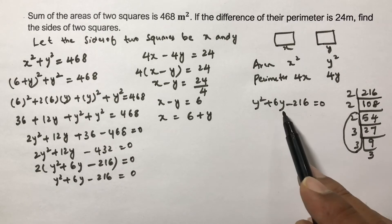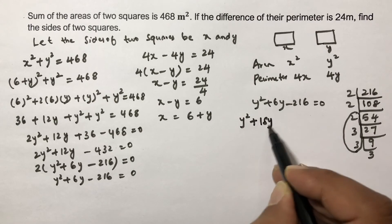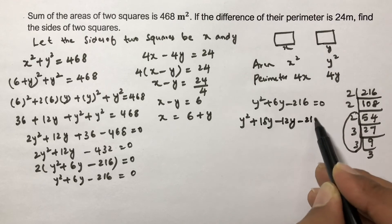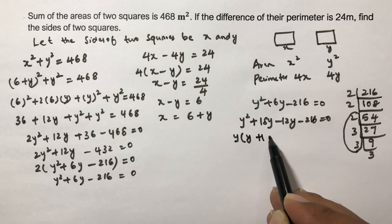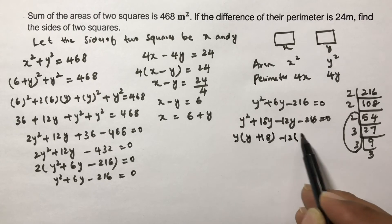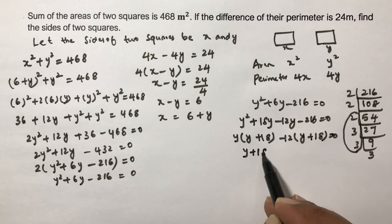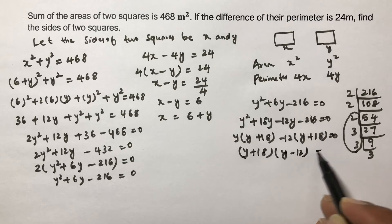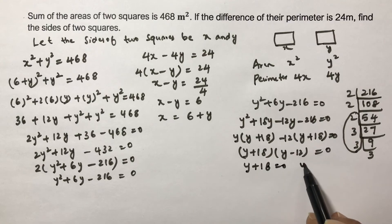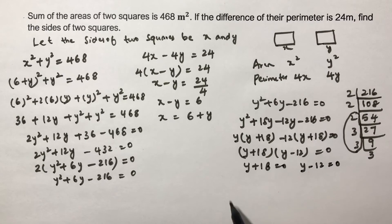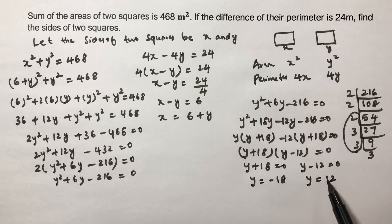Factorizing: y² + 18y − 12y − 216 = 0, giving y(y + 18) − 12(y + 18) = 0, so (y + 18)(y − 12) = 0. Therefore y = −18 or y = 12.